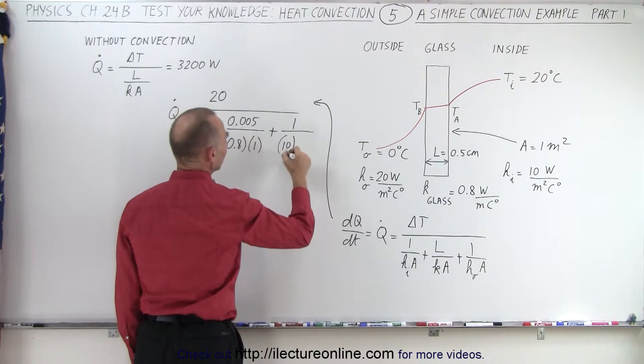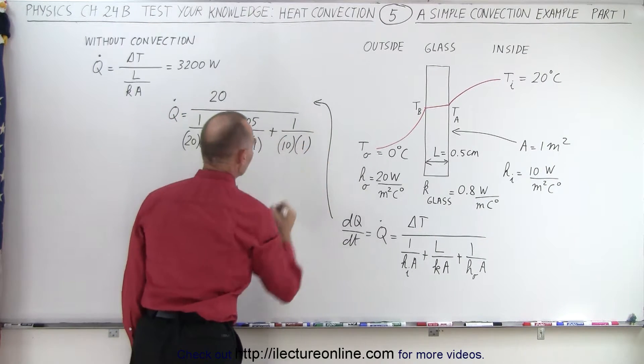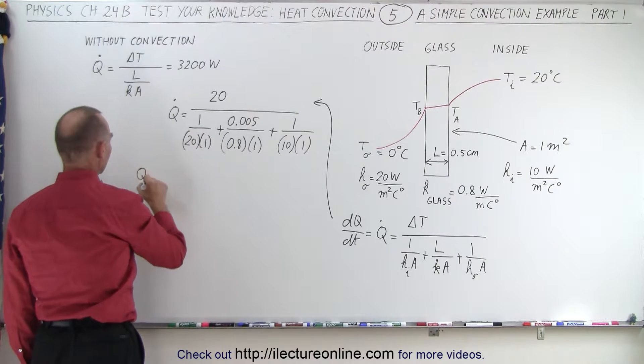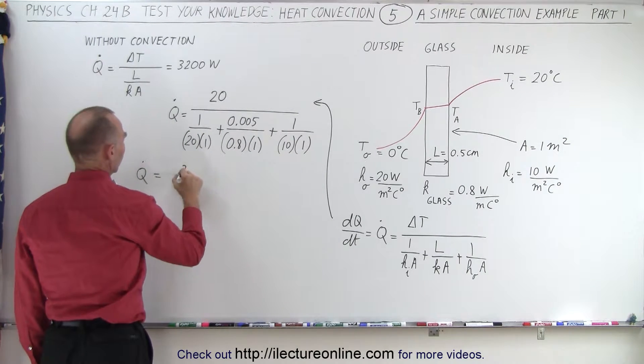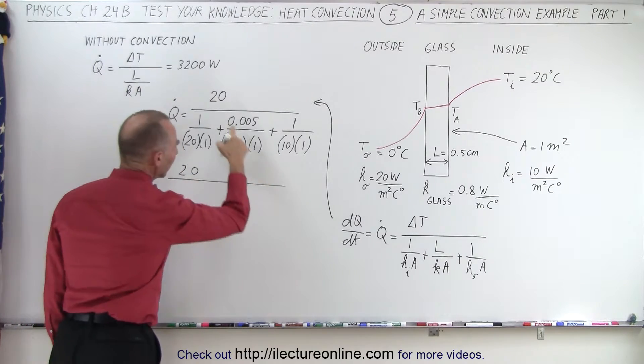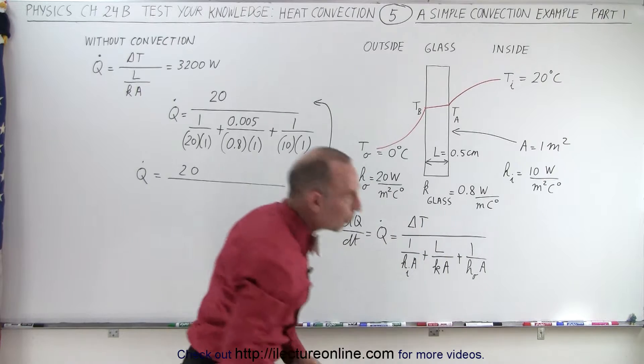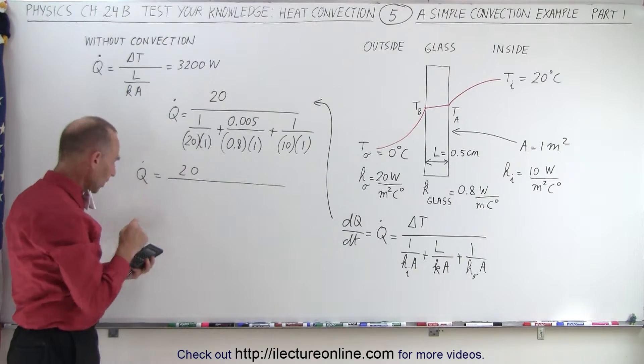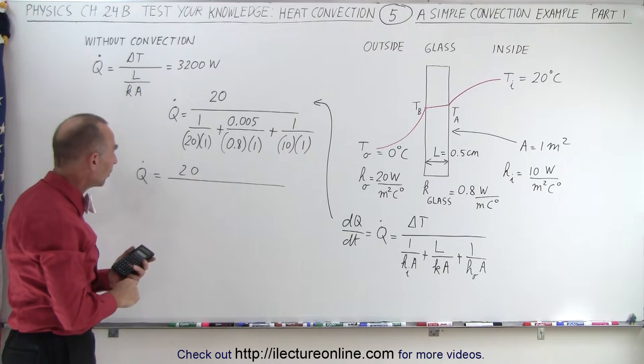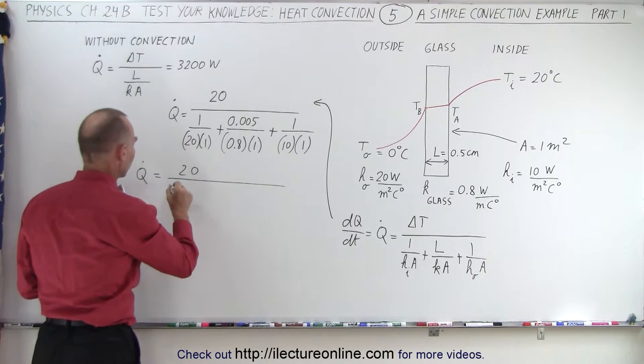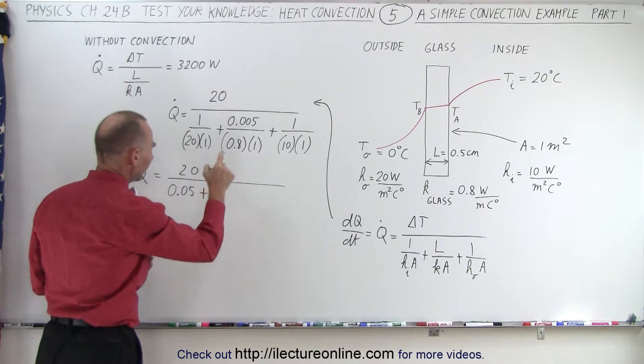Plus one over, now on the inside we have 10 times the cross-sectional area. Okay, now we have Q dot is equal to 20 divided by—and I'm going to write those intermediate values down because they do give us a little bit more understanding—so 1 divided by 20 is 0.05, so that would be 0.05.